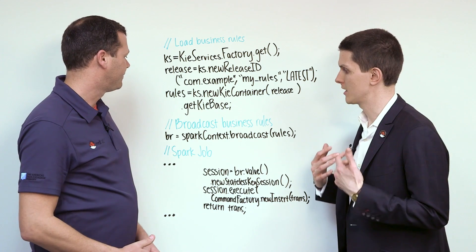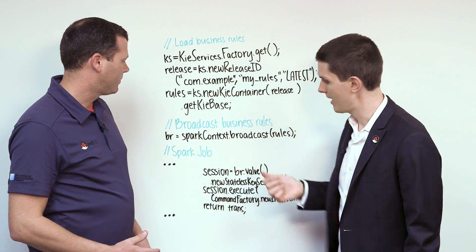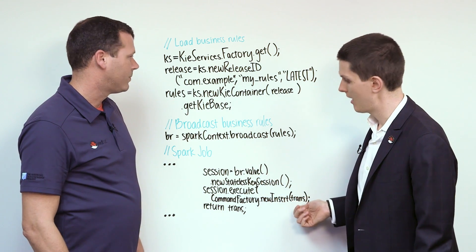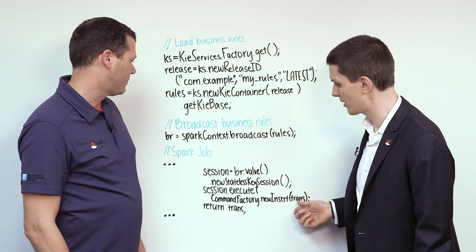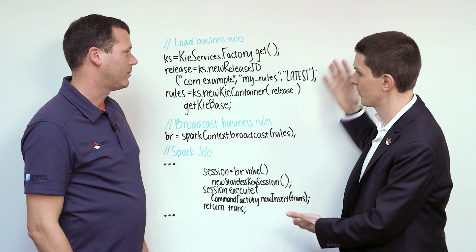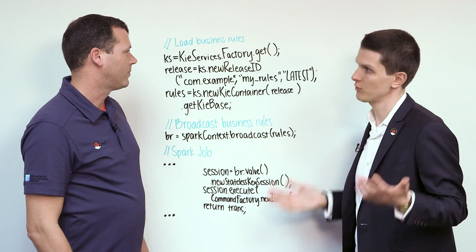So now me as a Spark programmer can take those rules and broadcast them out using my existing Spark context. And then later on down in my Spark job, in a point where I've got a transaction, I can run my rules against that transaction and return that result. And I've just replaced all that business logic I used to have in there with a few lines that are now referencing those rules that analysts control. That's really powerful.